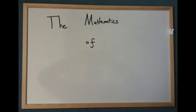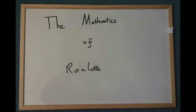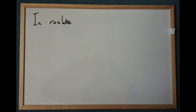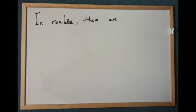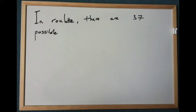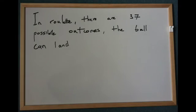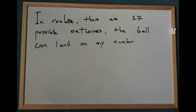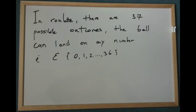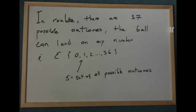The mathematics of roulette. In roulette, there are 37 possible outcomes. The ball can land on any number i, which is an element of the set of numbers 0 to 36. Let's call the set S the set of all possible outcomes.